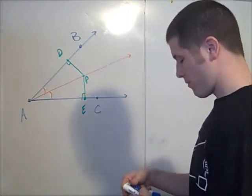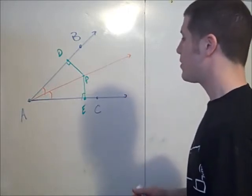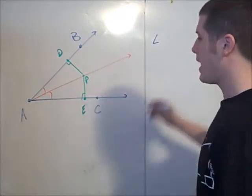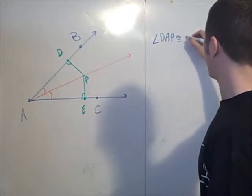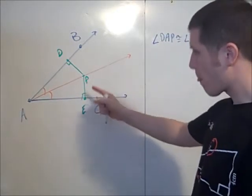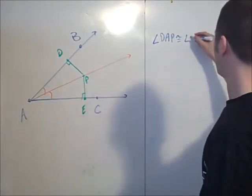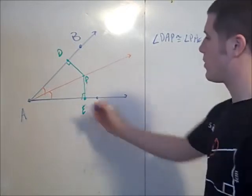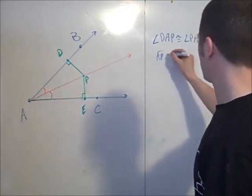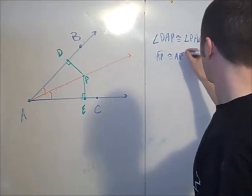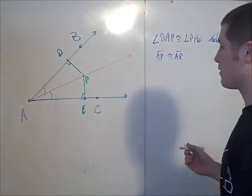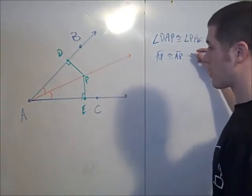First thing to notice is that angle DAP is congruent to angle PAE by definition of angle bisector. Also, we have AP congruent to itself by the reflexive property of congruence.